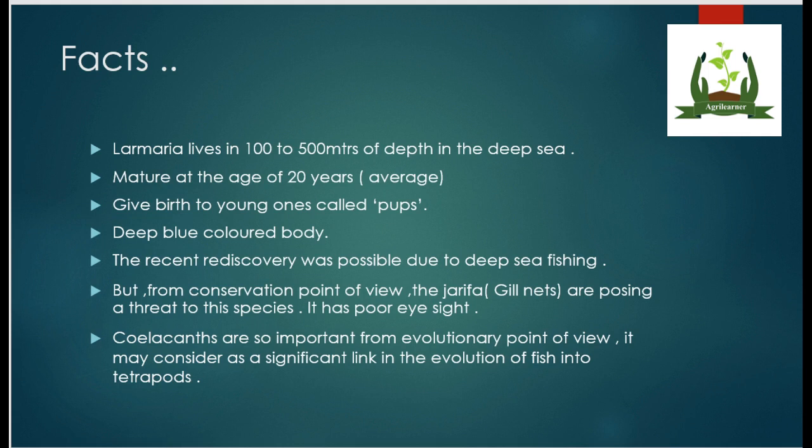Some key biological facts about the Coelacanth: their eyesight is very poorly developed; they mature at around 20 years of age on average and give birth to live young called pups. They have a deep blue or dark blue colored body.